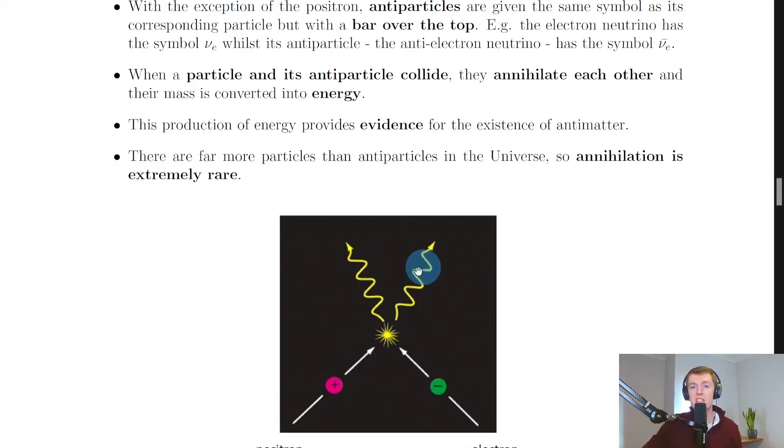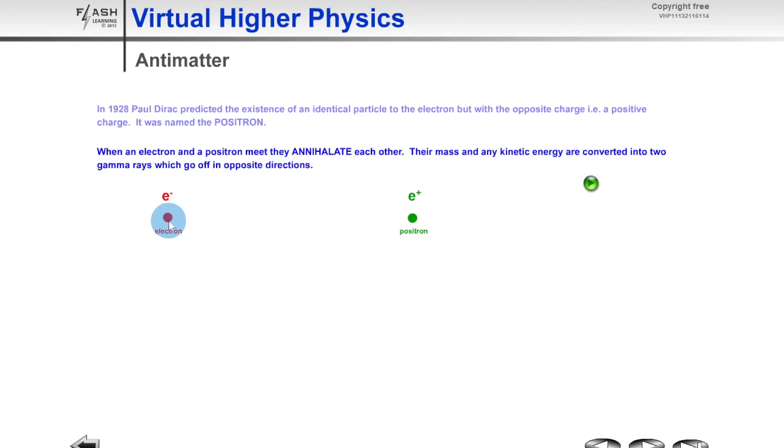And just to help you visualize this example of annihilation, I'll show you a quick simulation. So here you can see we've got an electron on the left and a positron on the right, so that's our matter particle and associated antimatter particle. And if we click play here, you'll see the two collide with each other and then produce gamma rays. And it says that their mass and any kinetic energy are converted into two gamma rays which go off in opposite directions. And remember, it's this production of energy in the form of gamma rays that provides evidence for antimatter.